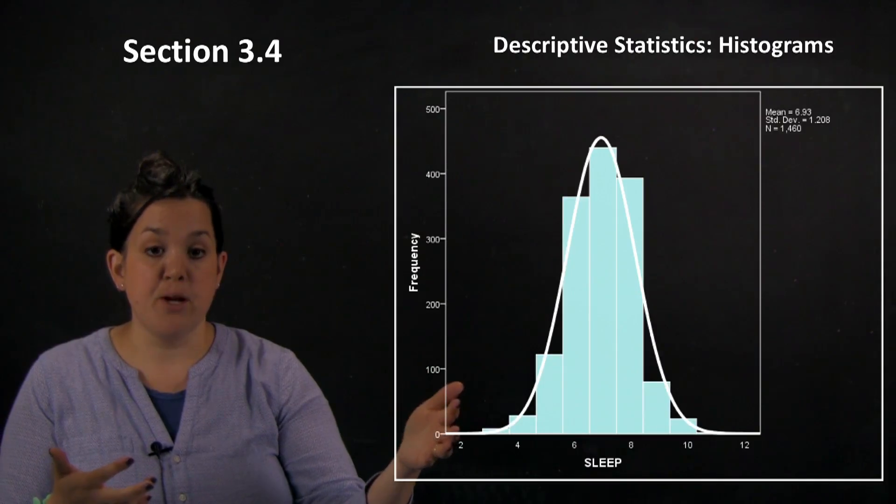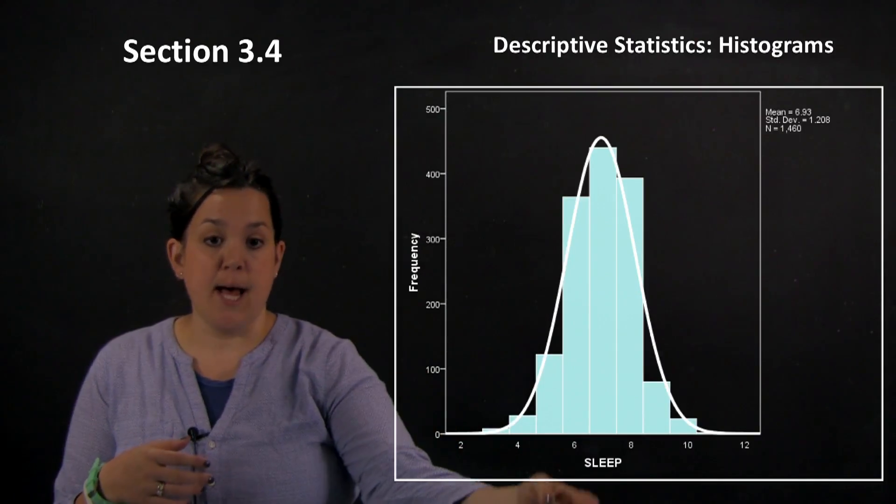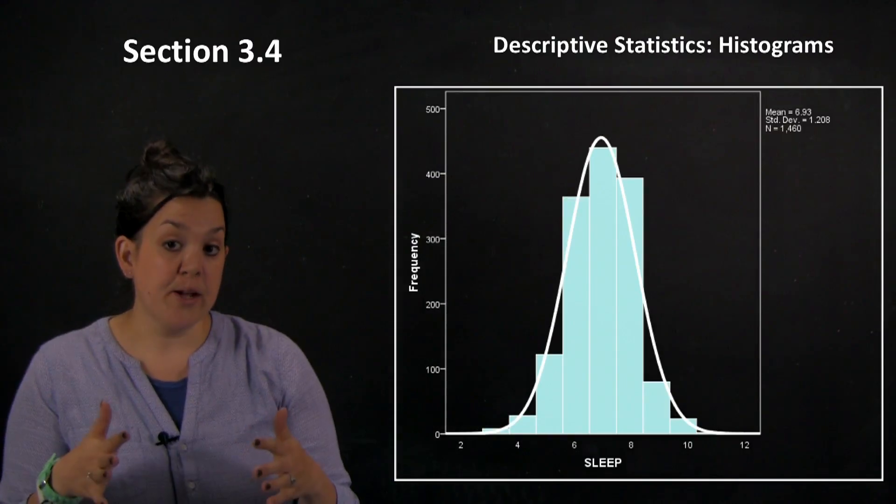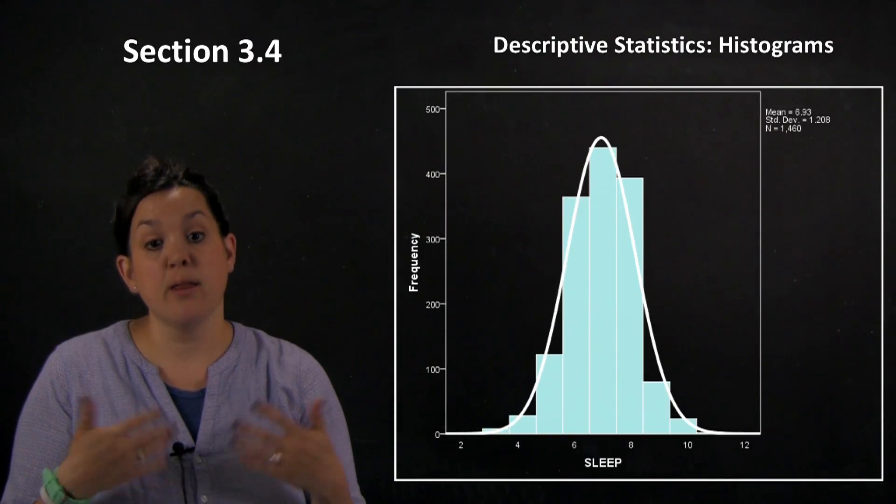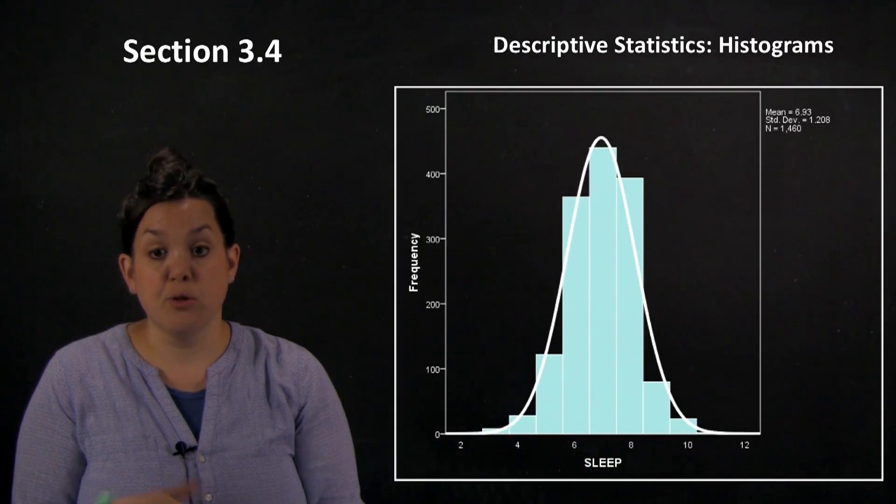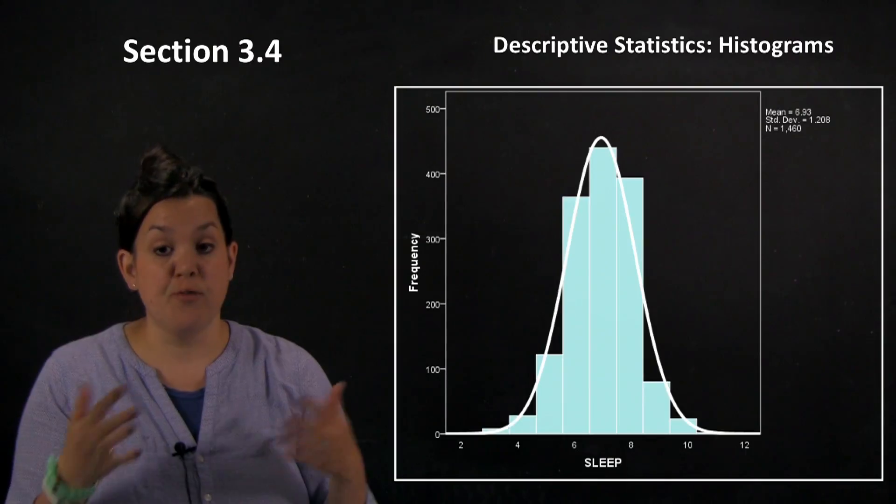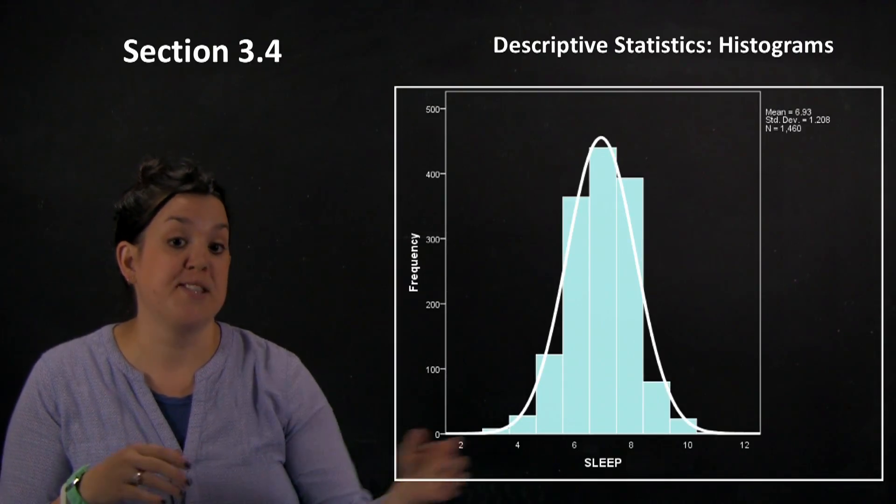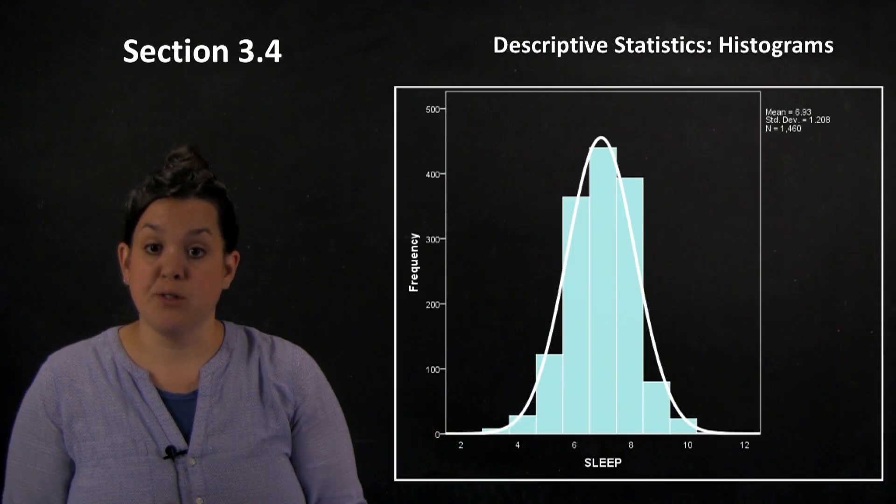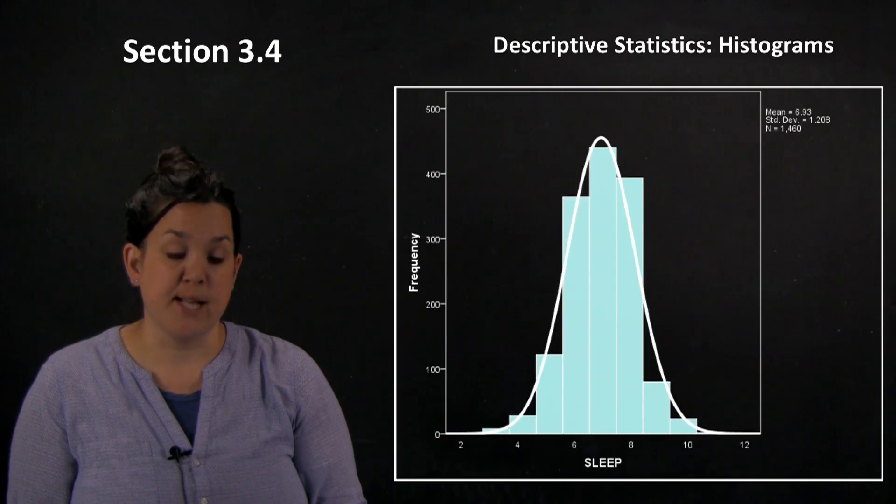For this histogram, it appears that the center is at about seven hours of sleep. One thing to recognize: if your data is symmetric, the center of the horizontal axis is going to also be the center of your data set. If it's asymmetric, you wouldn't have the center of the horizontal axis most likely represent the center of the actual data set.